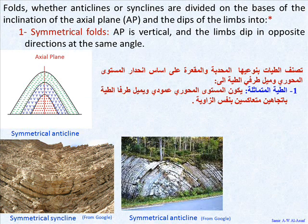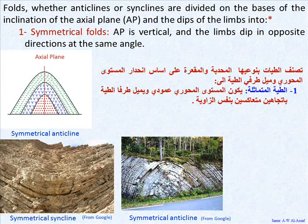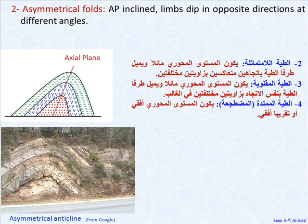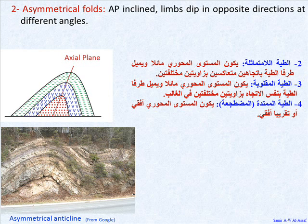Folds, whether anticlines or synclines, are divided on the basis of the inclination of the axial plane and the dip of the limbs into: 1. Symmetrical folds — the axial plane is vertical and the limbs dip in opposite directions at the same angle. 2. Asymmetrical folds — the axial plane is inclined, and the limbs dip in opposite directions at different angles.